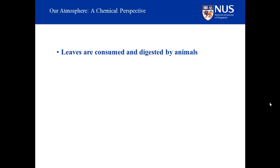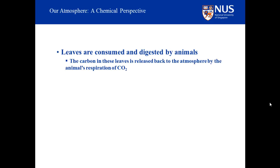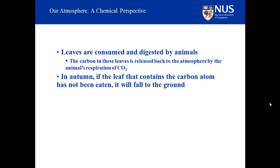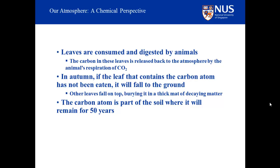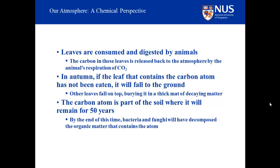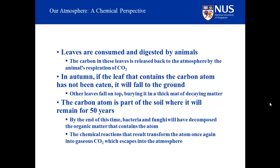Some leaves are consumed and digested by animals. The carbon in these leaves is then released back to the atmosphere by the animal's respiration as carbon dioxide. Suppose summer passes and autumn arrives and the leaf that contains the carbon atom has not been eaten. The nourishing substances and water that the leaf has received from the tree have ceased to flow. The leaf is released from the branch and settles to the ground. Other leaves fall on top, burying it in a thick mat of decaying matter. The carbon atom is part of the soil where it will remain for about the next 50 years. By the end of that time, bacteria and fungi will have decomposed the organic matter that contains the atom. The chemical reactions that result transform the carbon atom once again into gaseous carbon dioxide molecules, which escape back to the atmosphere.